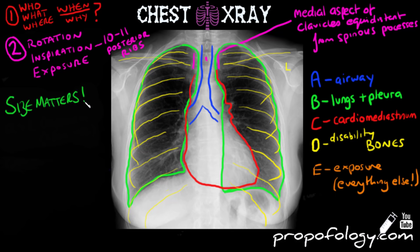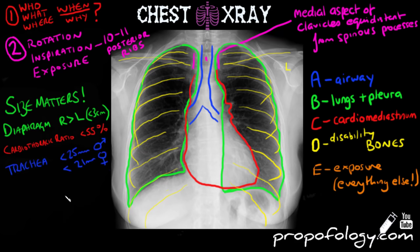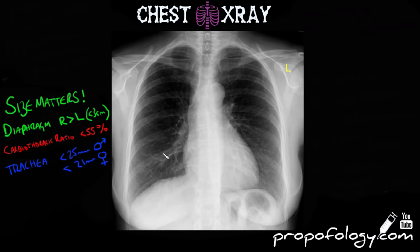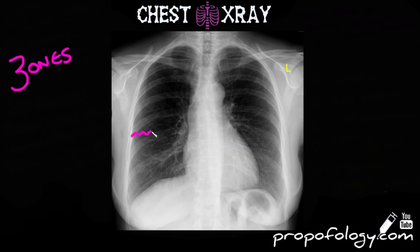Now that we've had a quick run through the x-ray, we're going to start comparing sizes of different anatomical structures. For the diaphragm, the right should be higher than the left, but by no more than three centimeters. For the heart, the cardiothoracic ratio should be less than 55%, meaning the heart should fill no more than 55% of the thoracic cavity. The trachea should be less than 25 millimeters across in a man and less than 21 millimeters in a woman. When looking at chest x-rays, you'll be examining the lung fields in the B part of your survey across their different zones.